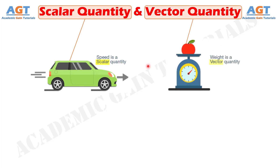A vector quantity, on the other hand, mandatorily has magnitude with unit and a specific direction. So specifying the direction of action along with its value or magnitude is mandatory while defining or stating a vector quantity. Displacement, weight, force, velocity etc. are vectors and thus have a specific direction of their application. Vector quantities can be either one-dimensional, two-dimensional, or three-dimensional parameters.